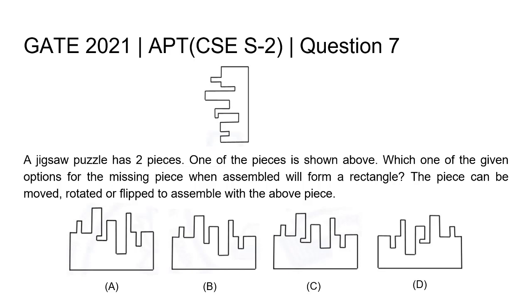The question is which one of the given options for the missing piece when assembled will form a rectangle. The piece can be moved, rotated or flipped to assemble with the above piece.